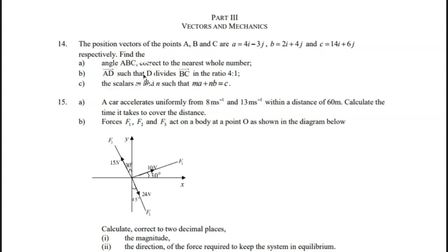Part B: The vector d is such that d divides BC in the ratio 4 is to 1. Part C: The scalars m and n such that m times vector a plus n times vector b equals c.